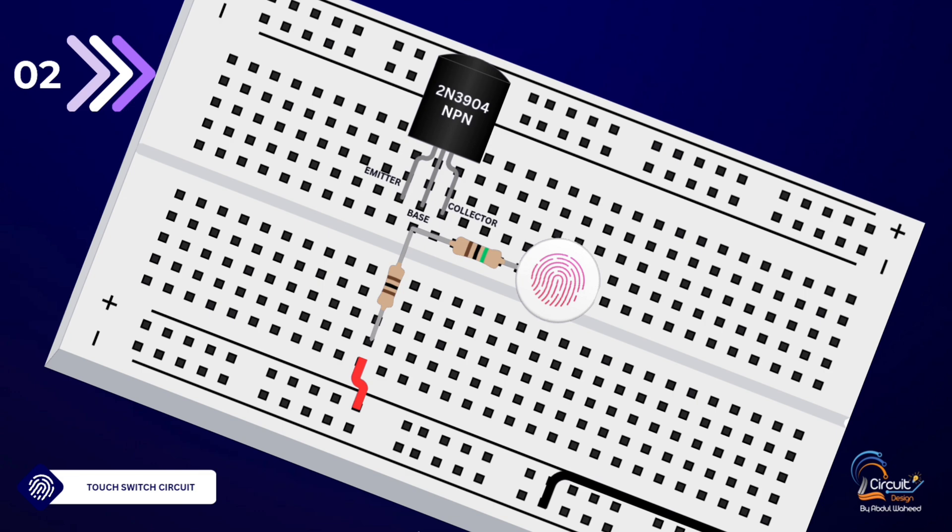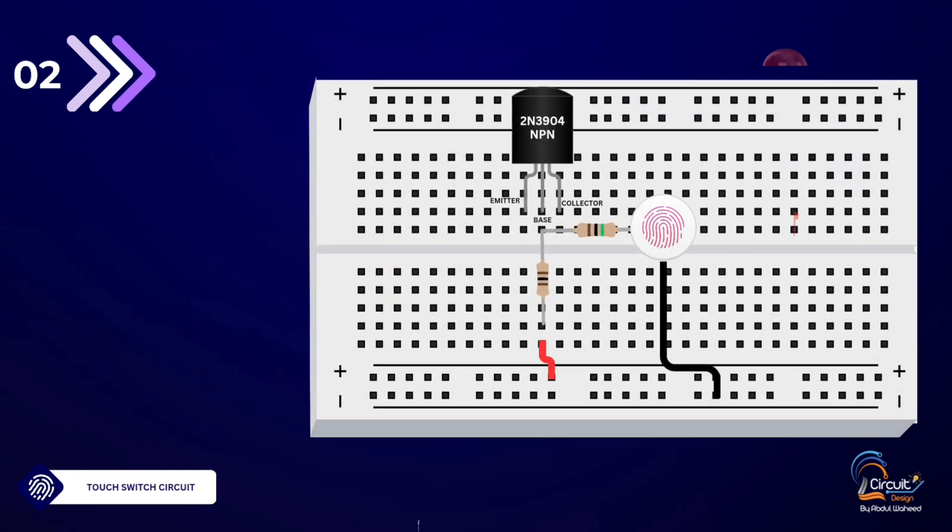Step 3: Wiring the touch plate. Connect the other terminal of the touch plate to the negative rail (GND) of the breadboard.